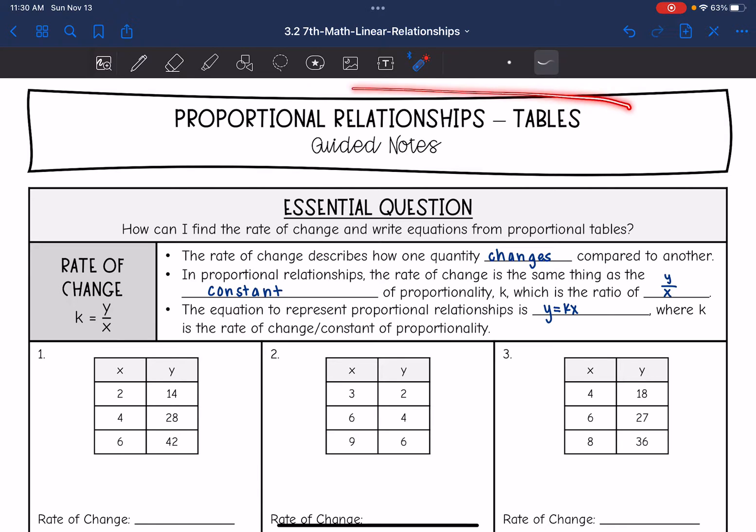Hey guys, today we are going to look at proportional relationships from tables. We're going to answer the question, how can I find the rate of change and write equations from proportional tables?